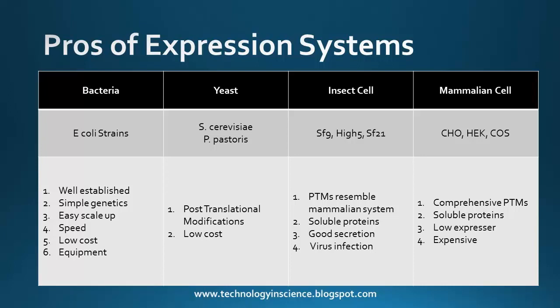Coming to the insect cells, SF9, Hi5, and SF21 are the strains most commonly used. The post-translational modifications resemble the mammalian system, protein can be produced in a soluble form, good secretion can be attained, and the insect cells can be infected with viruses.